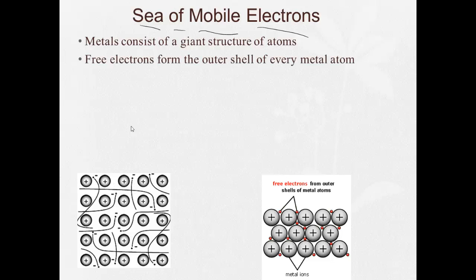These valence electrons, or these free electrons, they form the outer shell of every metal atom. And there's a freedom of movement. That's why we say a sea of mobile electrons. And this freedom of movement allows it to conduct heat, allows it to conduct electricity, and is the reason behind the malleability.